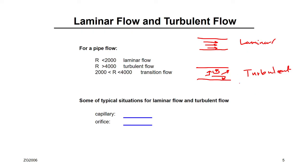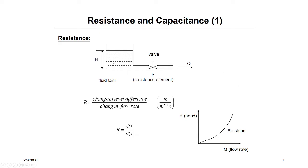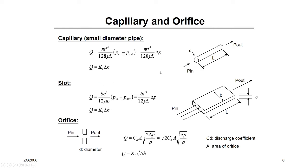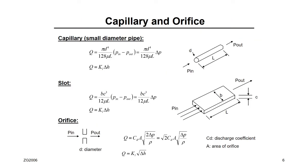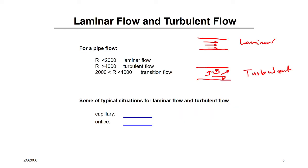We need to talk about laminar and turbulent flow because when we model a fluid system — a tank with a valve — the resistance depends on what kind of flow exists inside the valve. You will either have a capillary (a small tube or slot) or an orifice (like a valve used in gases). The orifice produces turbulent flow; the capillary produces laminar flow.